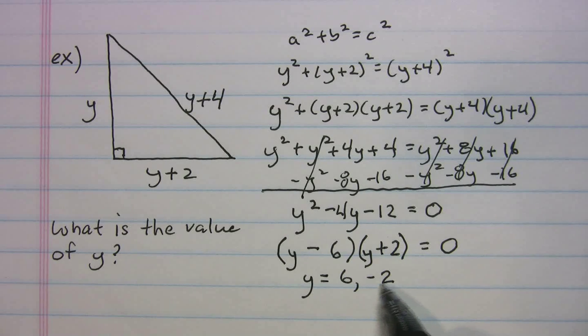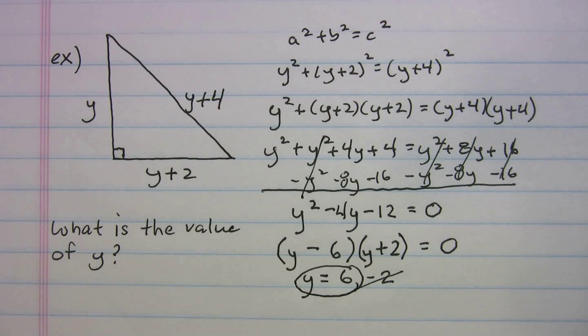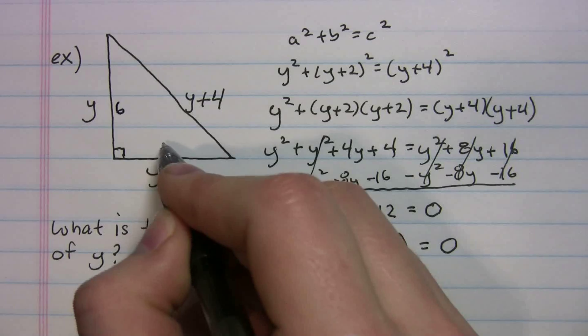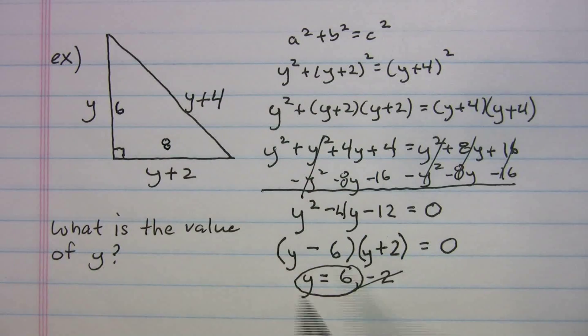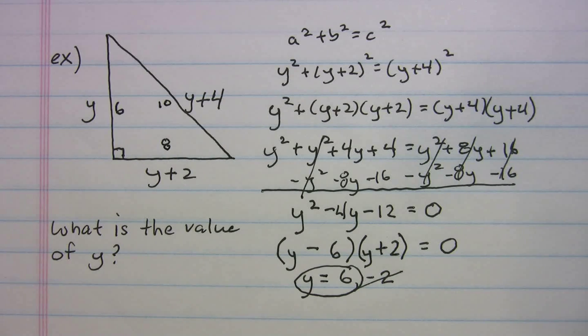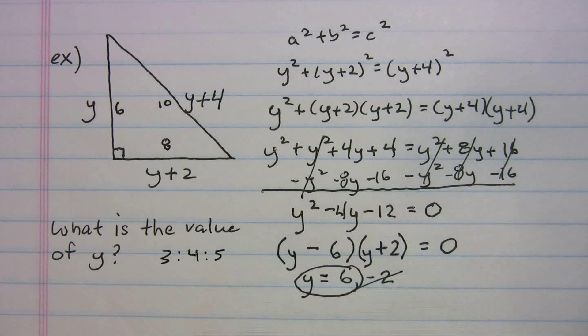Now we can't have a length that's negative 2, right? So y has to equal 6. And you know what's kind of funny about that? If we plug that in, what kind of triangle do we have? We actually ended up having a 6, 6 plus 2, 8, 6 plus 4, 10. We ended up with a 6, 8, 10 which is a multiple of the 3, 4, 5.